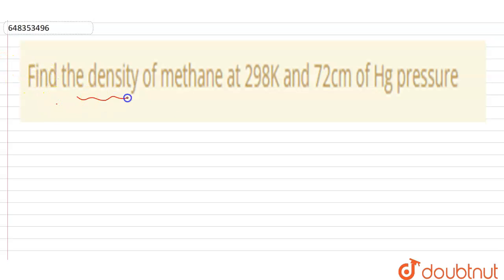Find the density of methane at 298 Kelvin and 72 centimeter of Hg pressure. Methane, we know, is CH4. We have to calculate the density of methane at this given condition. 72 centimeter can be written as 720 millimeter of mercury pressure.